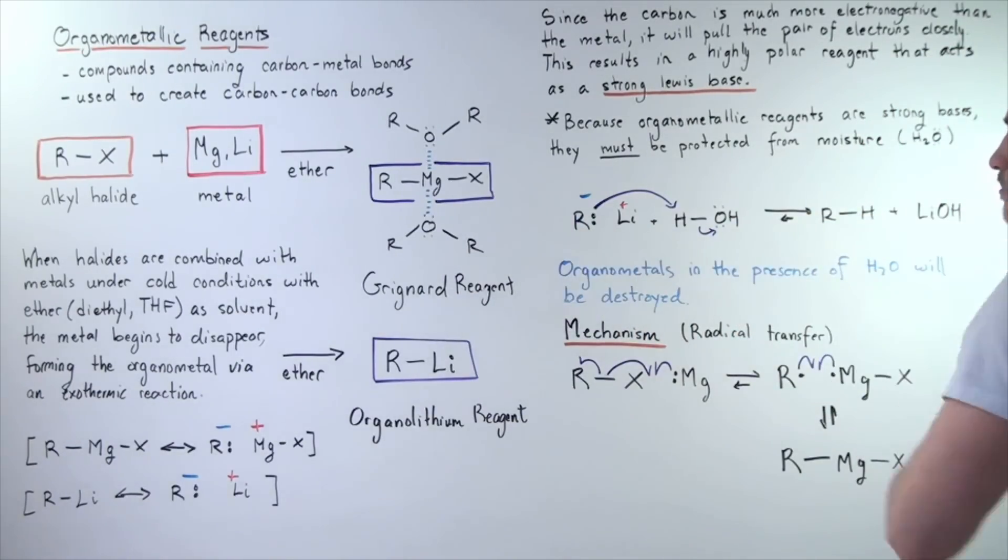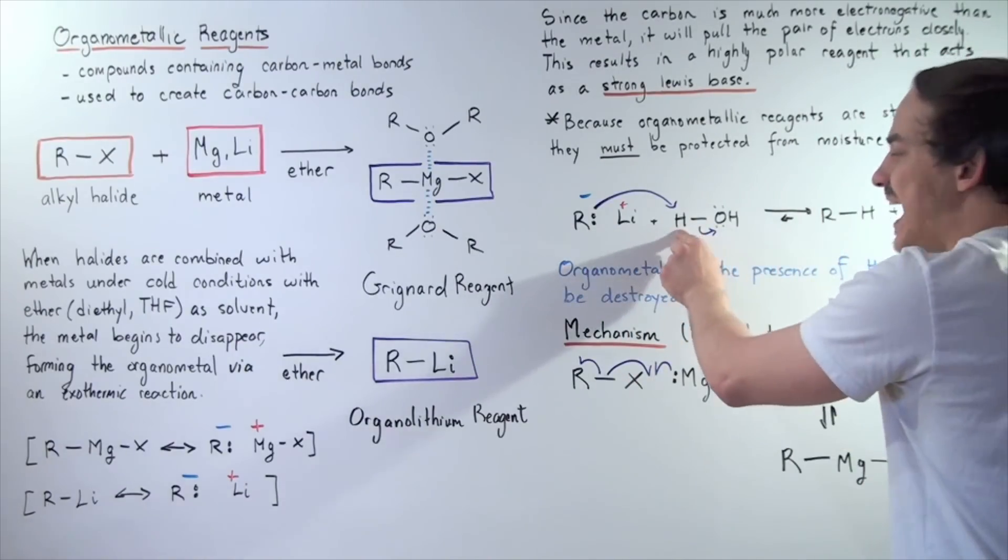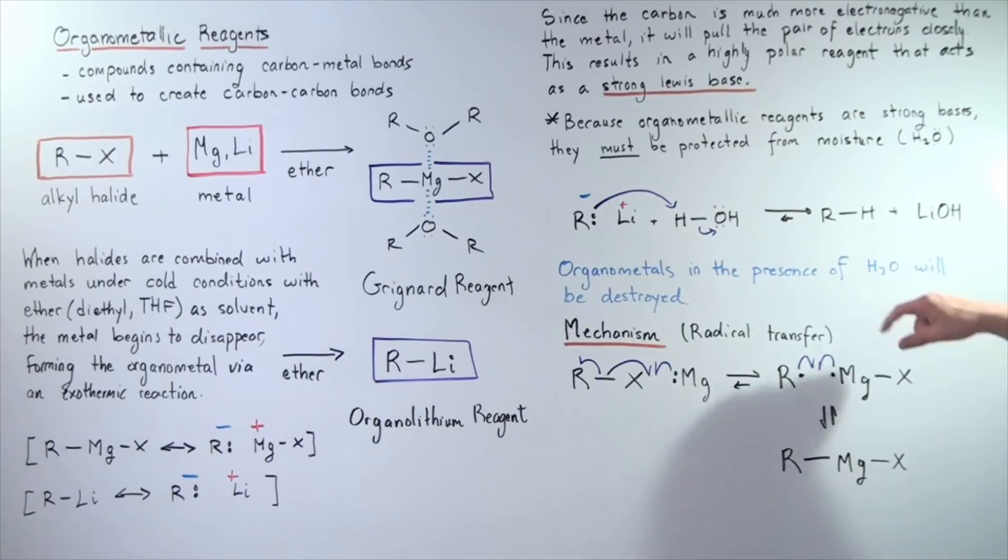in the following manner. So this pair of electrons will take this H atom and will create this R-H, so a hydrocarbon. And the lithium will combine with our hydroxide group.